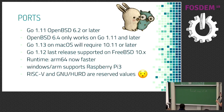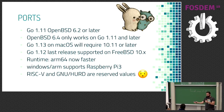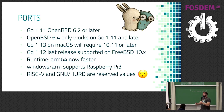New ports: Go 1.11 works on OpenBSD 6.2 or later; OpenBSD 6.4 only works on Go 1.11 and later. Go 1.13 on macOS will require 10.11 or later, so Go 1.12 didn't break anything but Go 1.13 will. Go 1.12 is the last release supported on FreeBSD 10.x. Runtime ARM64 is now faster. Windows ARM supports Raspberry Pi 3. RISC-V reserved values, and GNU Hurd also has reserved values — meaning work might start in the future.